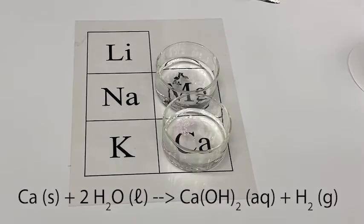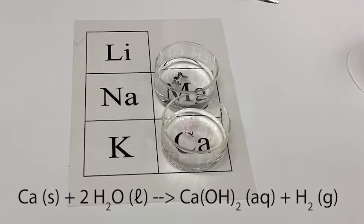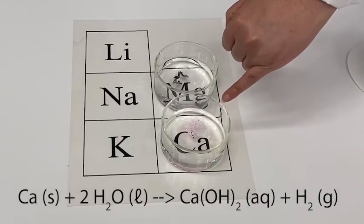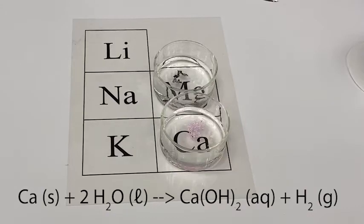Since calcium is further down the periodic table, we would expect it to be more reactive than magnesium. You can see just the start of a pink color, indicating the presence of calcium hydroxide.